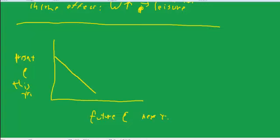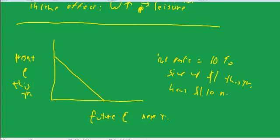And the budget constraint is based on the interest rate. So if you give up a dollar's worth of consumption today, you can get, let's say, a dollar ten tomorrow. If the interest rate is ten percent, then if you give up a dollar worth of consumption today, this year, you can have a dollar ten next year.